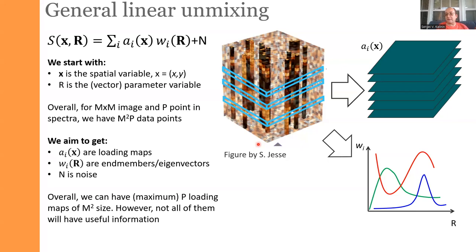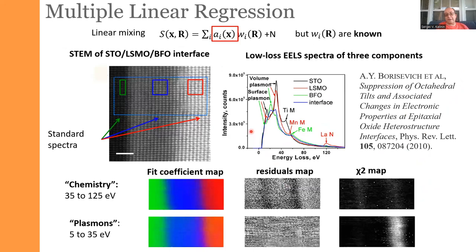There are strong correlations between spectra at different locations, and linear unmixing exploits these correlations to simplify the data set — it is almost the same logic as ZIP compression. The compression often reveals the physical meaning of the data; it is similar to how humans understand the world by finding simplifications. Once we do general linear unmixing, the order of pixels in the image plane doesn't matter: if we shuffle the pixels, the components won't change but the loading maps will be shuffled accordingly.